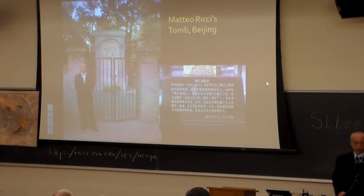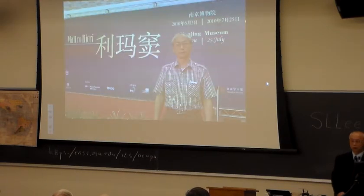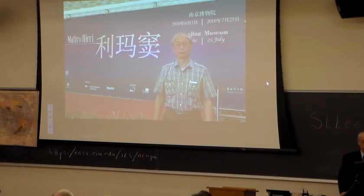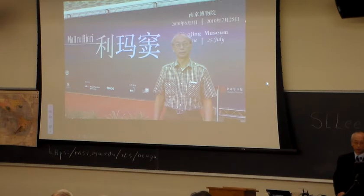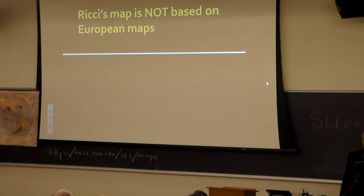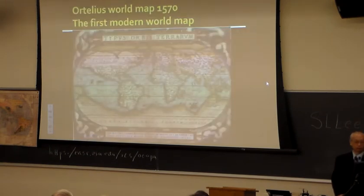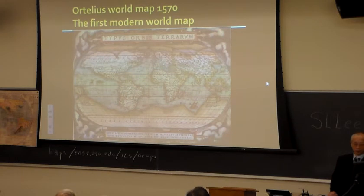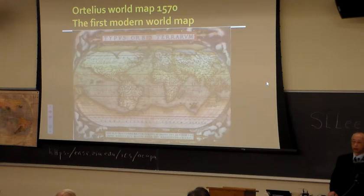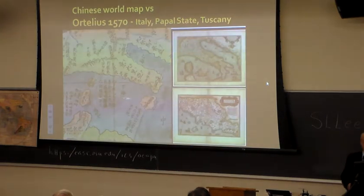I went to Matteo Ricci's tomb in Beijing, and this was supposed to be at a 400-year anniversary exhibition at Nanjing Museum in 2010. I saw the real map they brought from Italy, and the maps that supposedly he drew from European maps. Here's the shocking piece: Ricci's map is not based on European maps. Why? Italy on the Ortelius map looks like a boot — he's an Italian, he should know what Italy looks like. Every primary school kid should know what Italy looks like. But on the 1602 Chinese world map, there's no tip or heel on the boot.